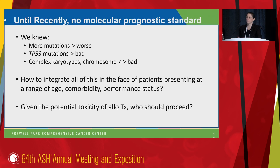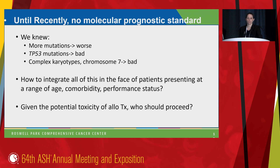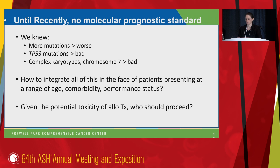This is quite complicated. Until recently, we had no molecular prognostic standard that would allow us to include specific and multi-mutational events into our ability to prognosticate. We certainly knew that more mutational events were worse, and that the presence of TP53 mutations was definitely bad. We also recognized that complex karyotype and loss or deletion of chromosome 7Q were associated with bad risk. But when patients sit in front of us, how do we integrate all of this data and make sense of what treatments to choose, particularly allogeneic transplant, which is associated with substantial toxicity?